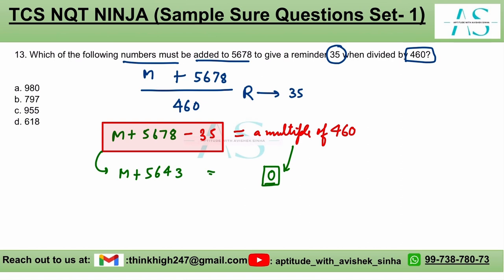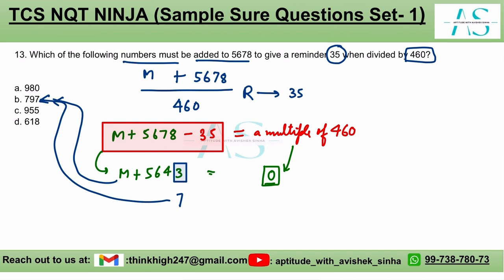Now, which of the values can you add to this to get a zero at the end? Since we have 3 in the units place, the only possibility is 7. Do any of the options end in 7? Yes. So we can be 100% sure that the value of m is 797. That is, 797 plus 5643 is a multiple of 460, and that is what we were looking for.